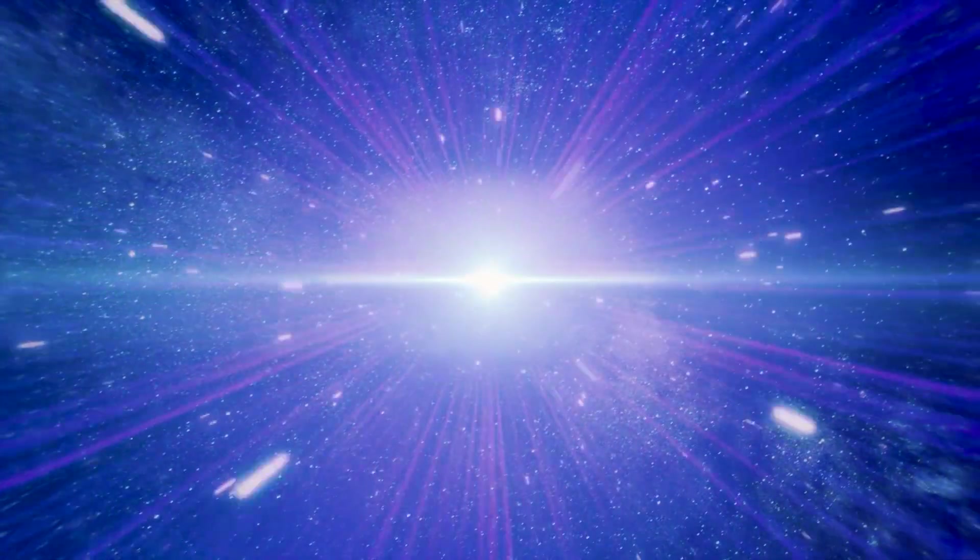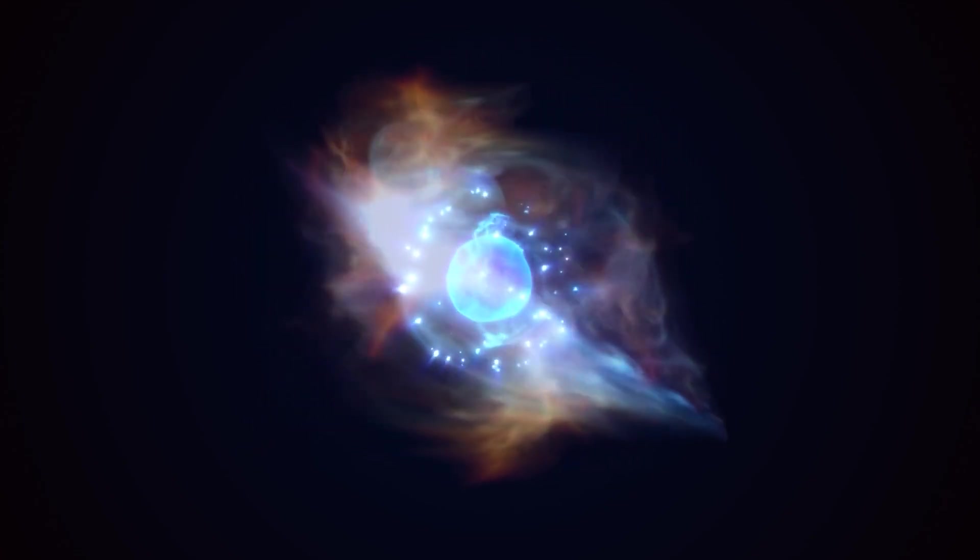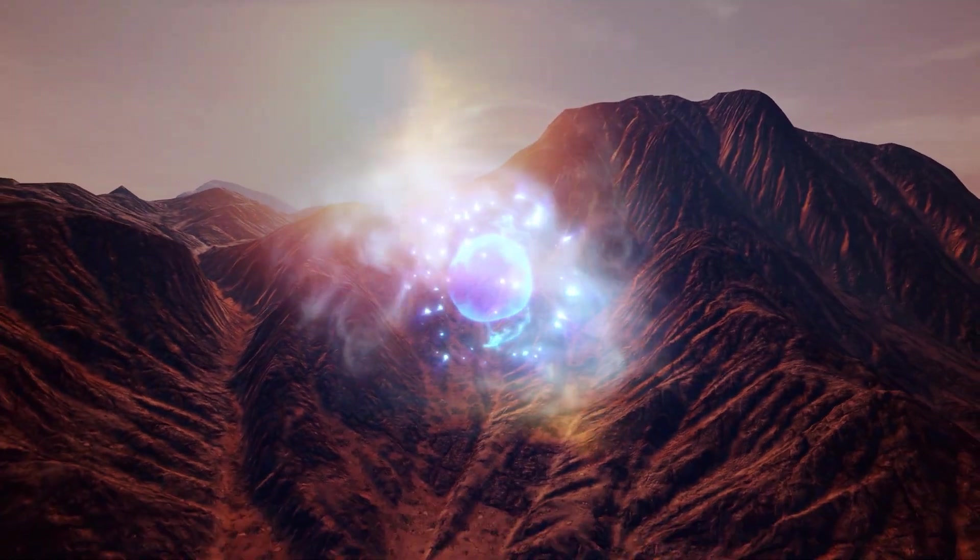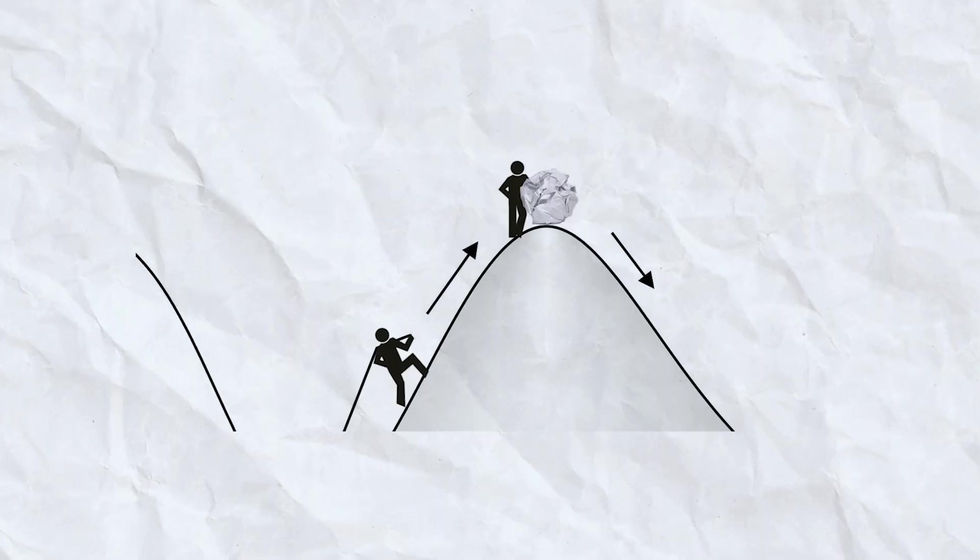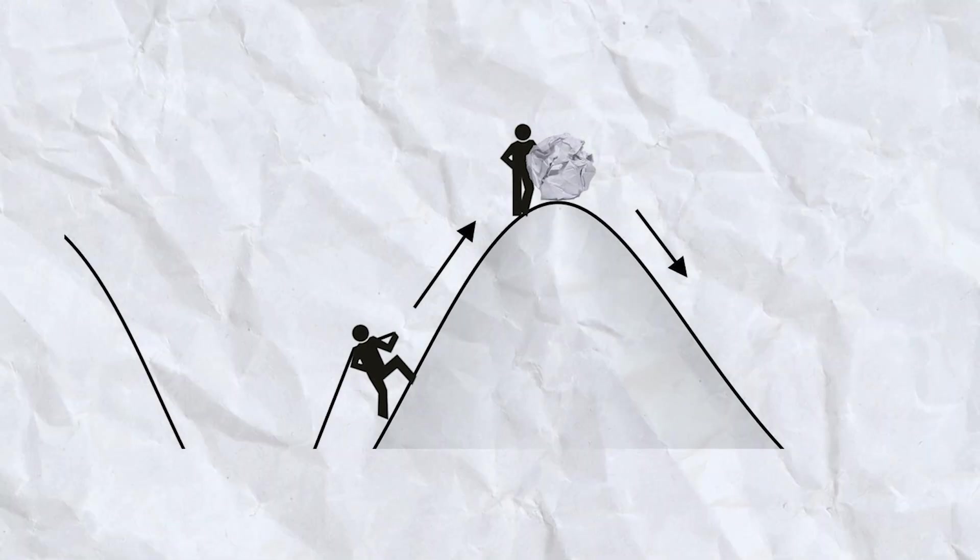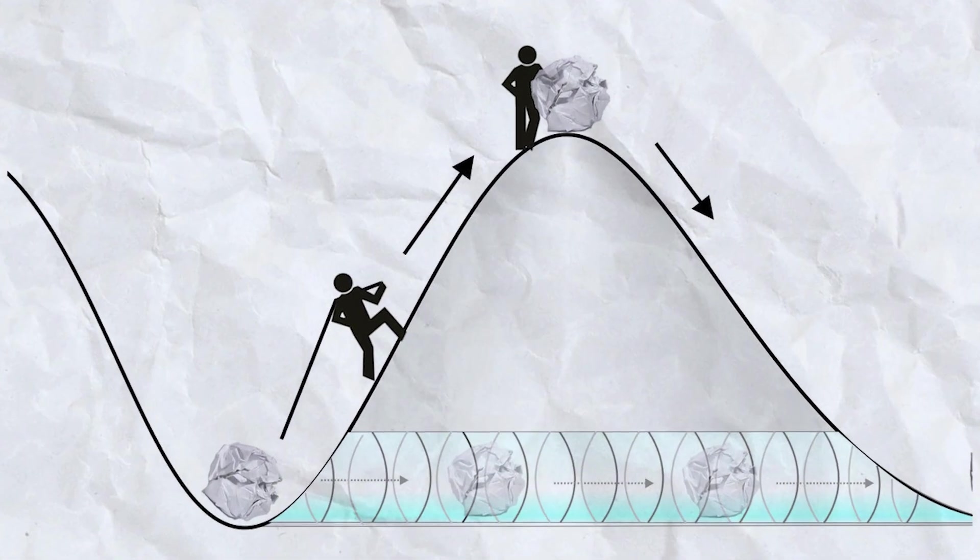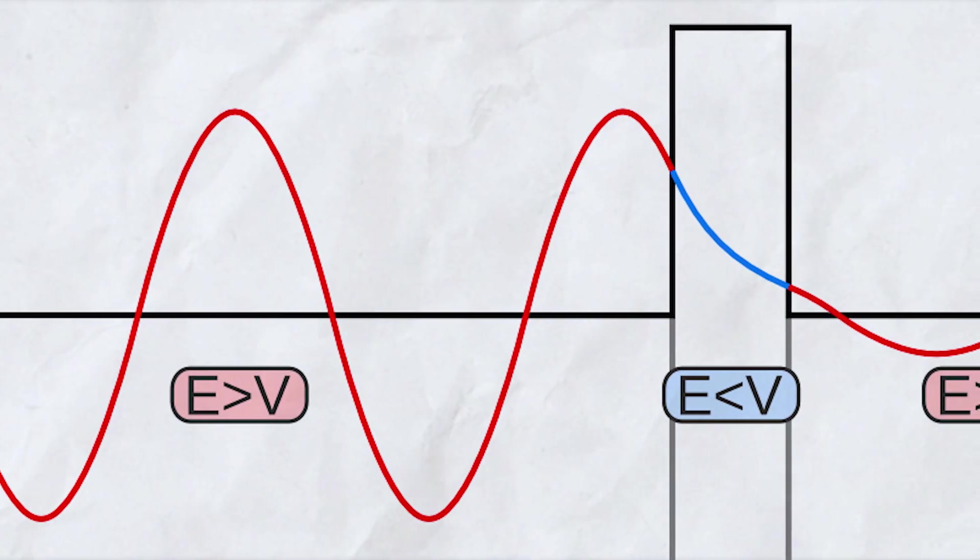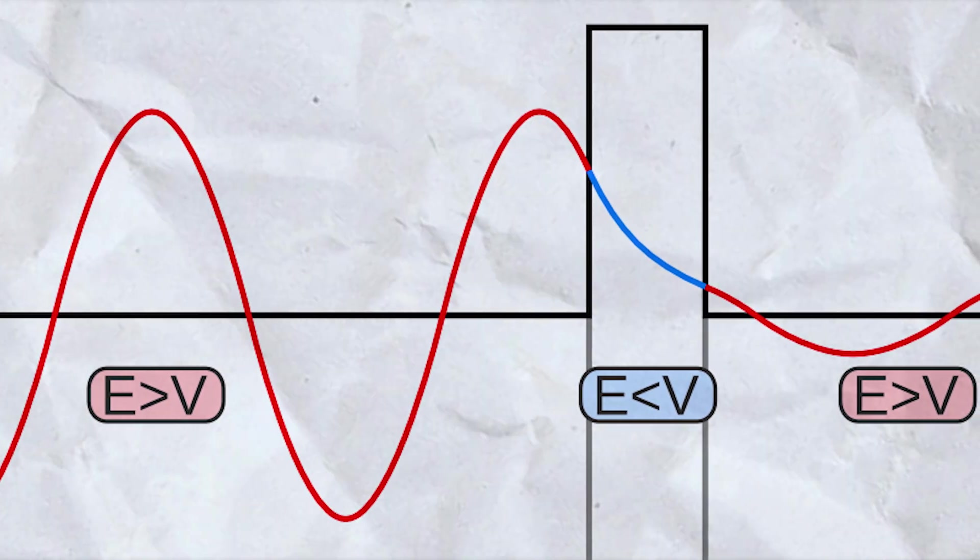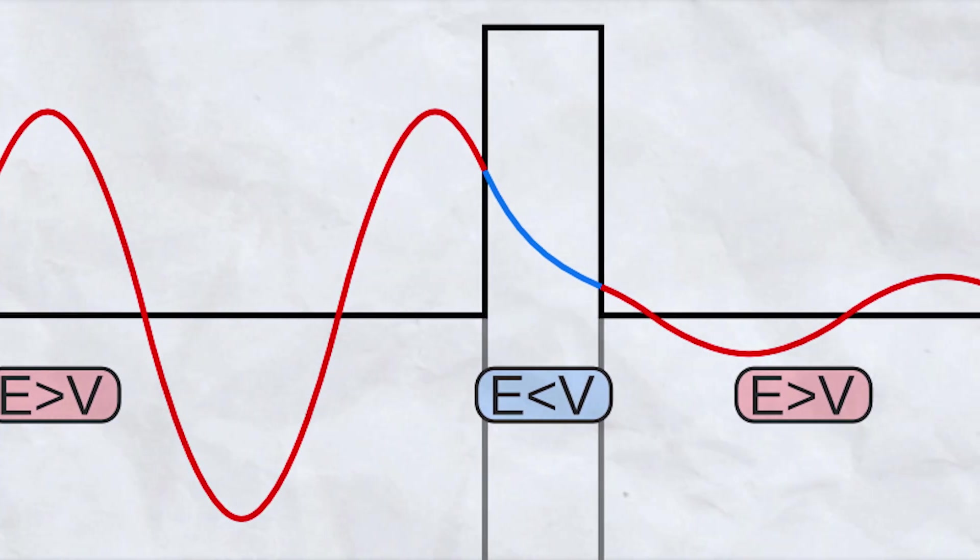Next up, we have quantum tunneling. So let's just pretend we have an electron trapped in an energy well. For the sake of this, we'll just imagine this well is like a valley surrounded by very tall mountainous hills. In theory, the particle would need enough energy to climb over the hills to escape the well. But that's not always the case. Quantum tunneling is this phenomenon where particles pass through barriers that, according to physics, should be impossible to cross.